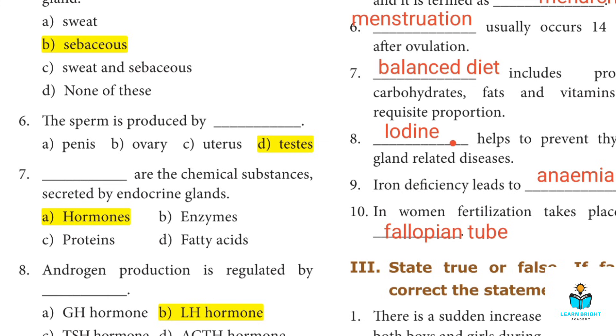Seventh: These are the chemical substances secreted by endocrine glands. Answer A: Hormones.